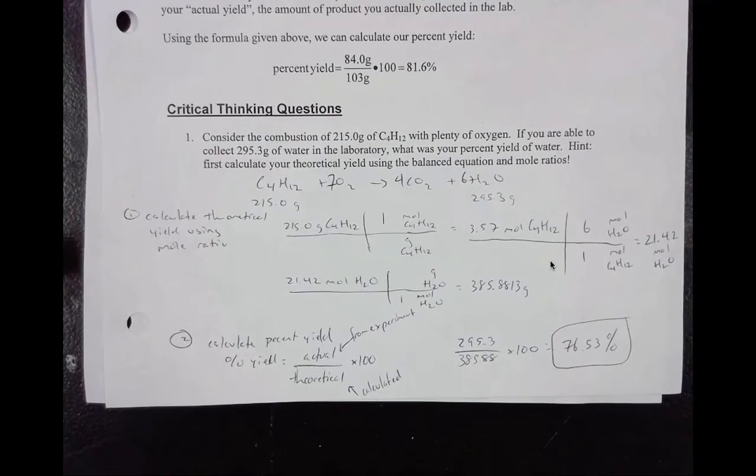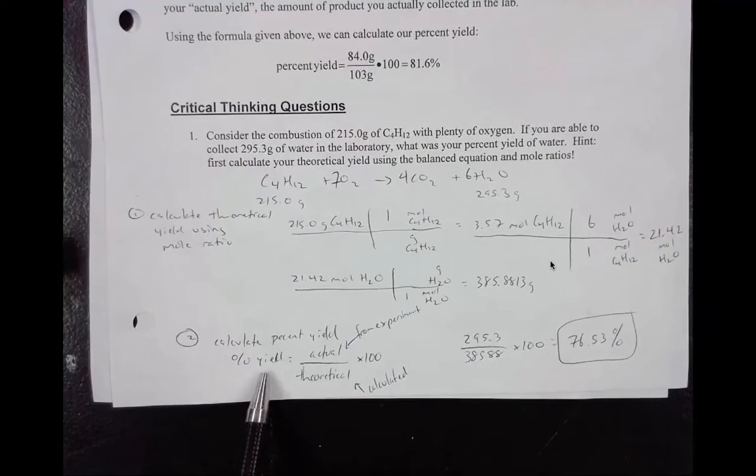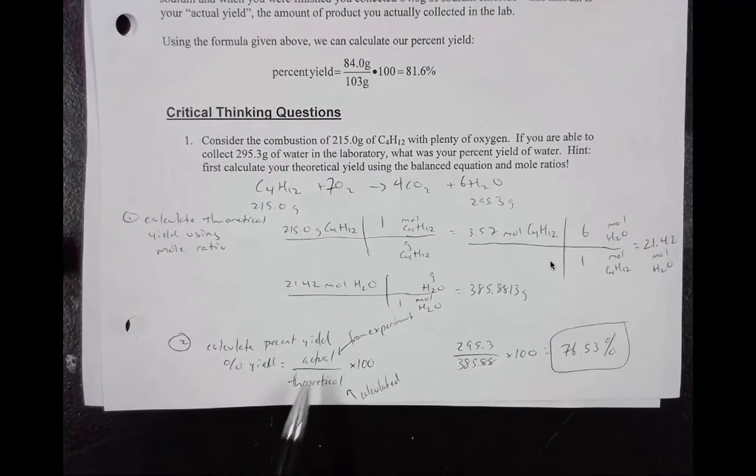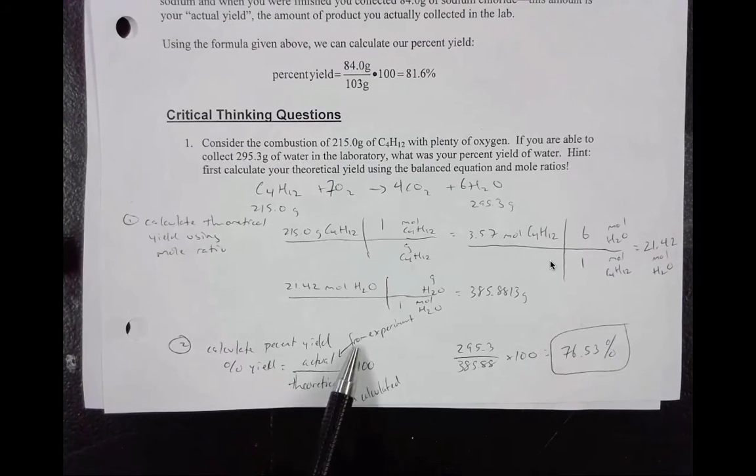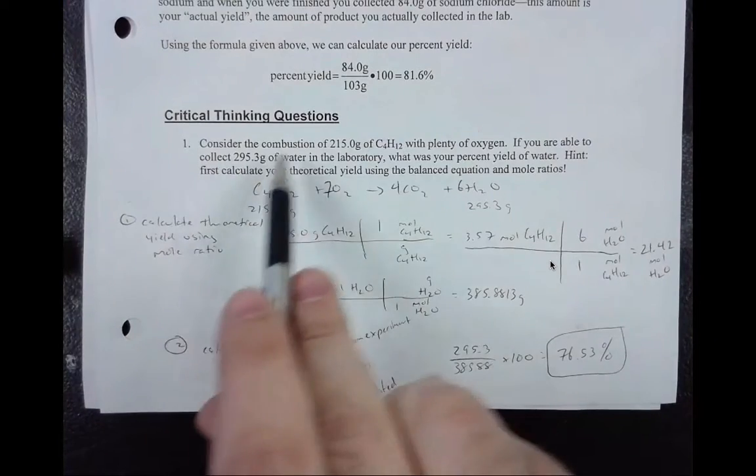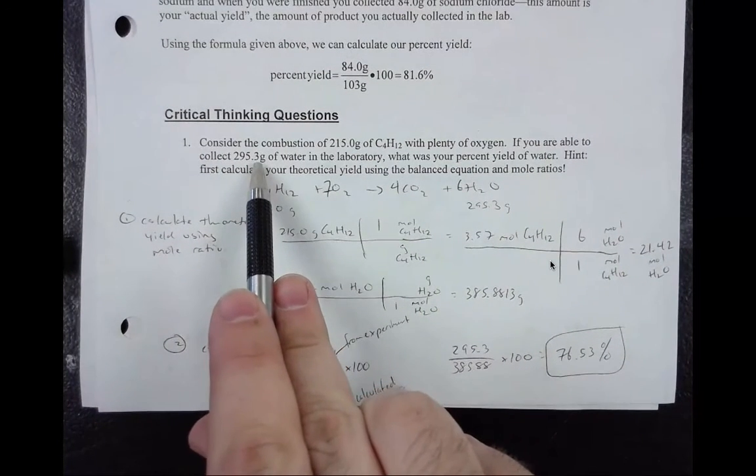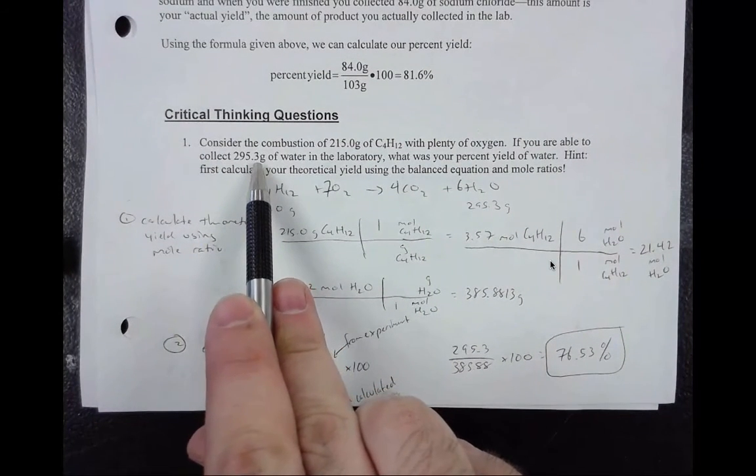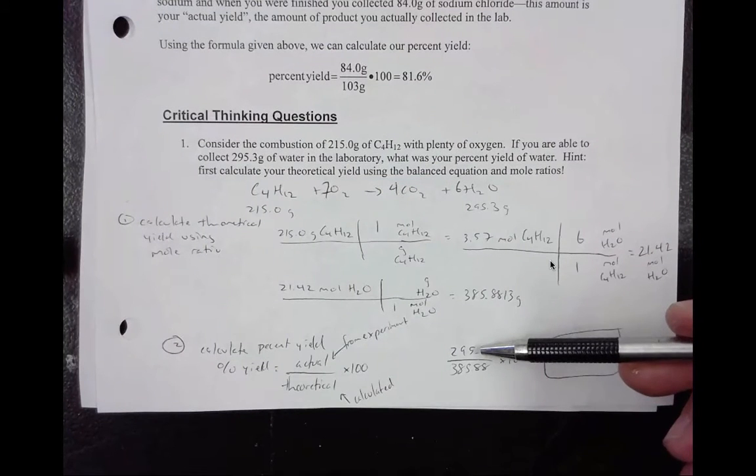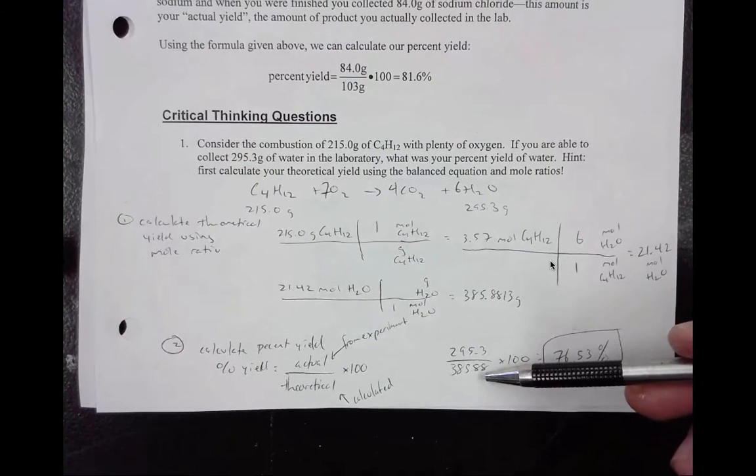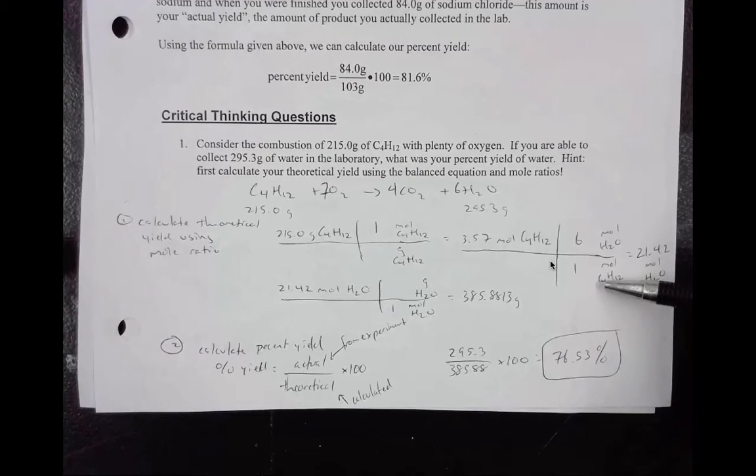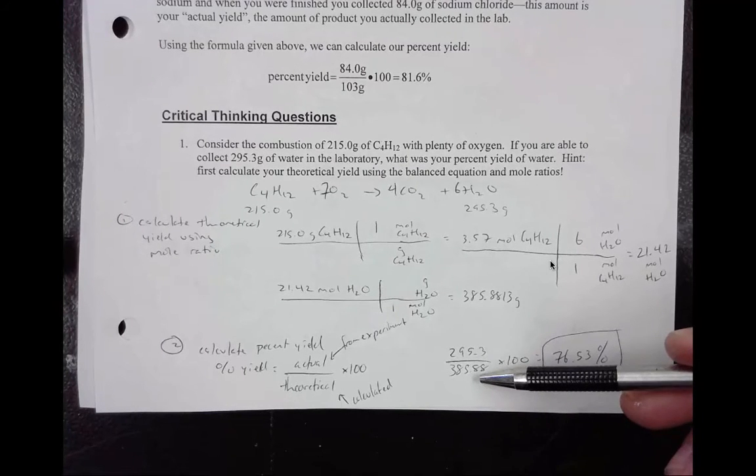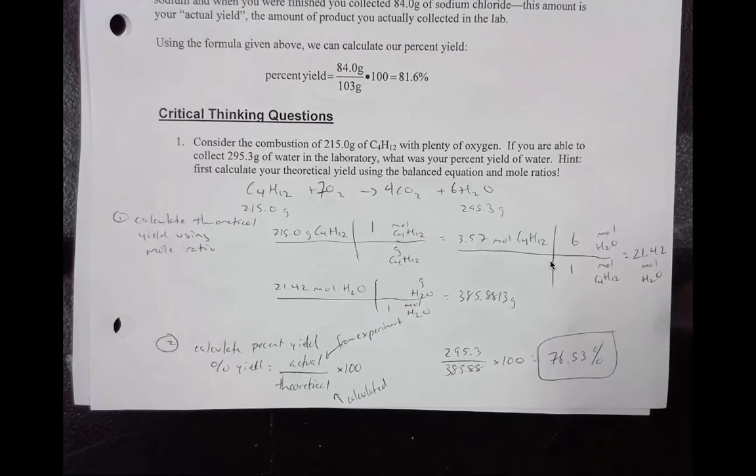Step 2 is to now calculate our percent yield. Like we talked earlier, the percent yield is the actual divided by the theoretical. So the actual is from the experiment. That means you just have to read through here and it tells you how much water was collected. It tells us 295.3. So that's why we put 295.3 in the actual. The theoretical is what we just calculated from part 1. So that's the 385.88. Then you multiply by 100 and it gives us 76.53%.